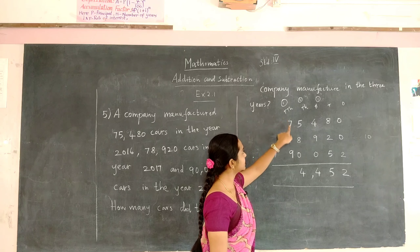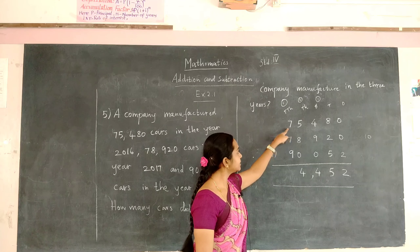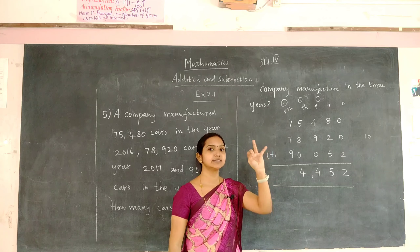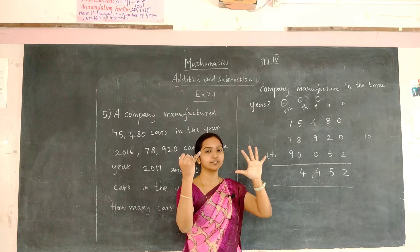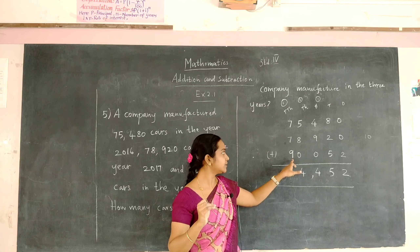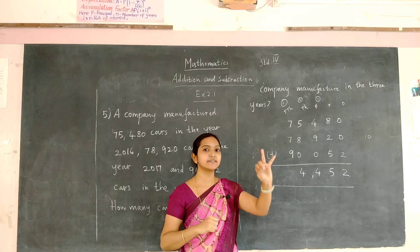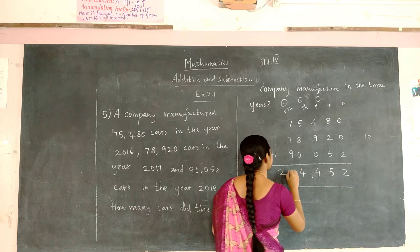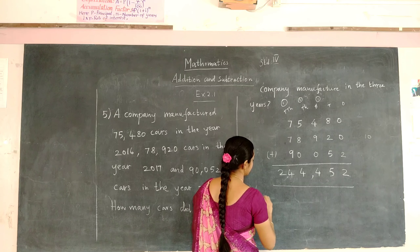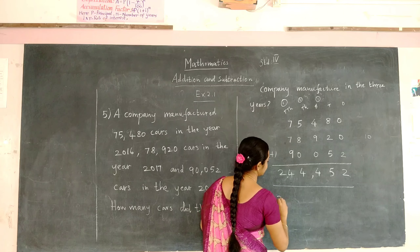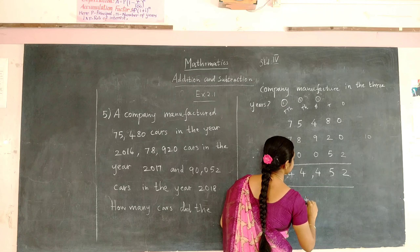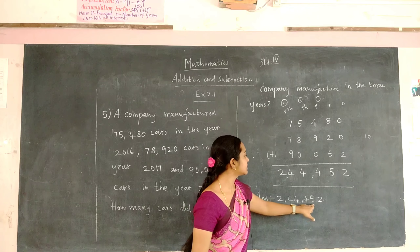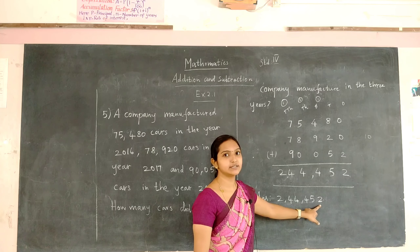You have to add 1 and 7: 7 plus 1 will be 8. To 8 you have to add 7: start counting from 8 — 9, 10, 11, 12, 13, 14, and 15. To 15 you have to add 9: that is 16, 17, 18, 19, 20, 21, 22, 23, and 24. So the answer is 2,44,452 cars manufactured in 3 years.